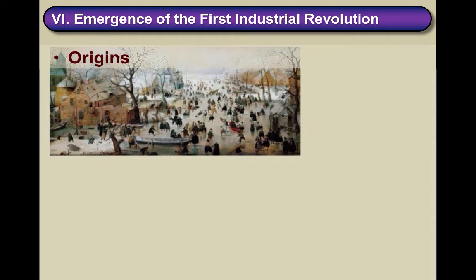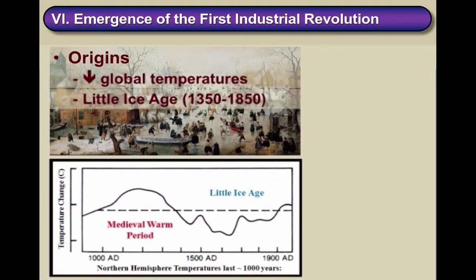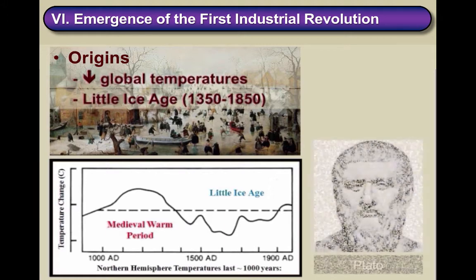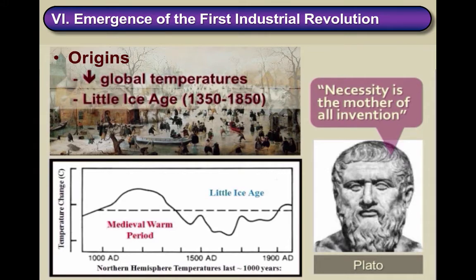The origins of the Second Agricultural Revolution are actually quite similar to the origins of the First Agricultural Revolution — both were preceded by colder global temperatures. The Little Ice Age was a period of colder global temperatures beginning around 1350 and lasting until around 1850. These colder temperatures shortened growing seasons, reducing farm productivity and the amount of food available per person. This stressed the human population, leading to famines, starvation, and death, which in turn led to necessary innovations to provide new means of producing food for survival. This fits perfectly with the famous quote that necessity is the mother of all invention.